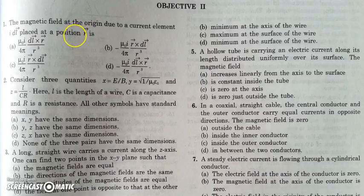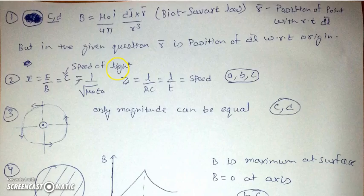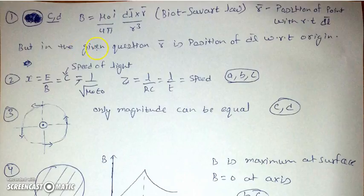So this vector will be minus R. According to the Biot-Savart law, the magnetic field is nothing but μ₀I dL cross (minus R), so it will be either R cross dL or dL cross minus R — the minus can be taken outside. The R in Biot-Savart law is the position of the point with respect to dL, but in the question R is the position vector of dL with respect to the origin, so it will be treated as minus R in the original Biot-Savart law.